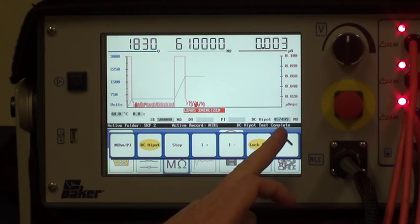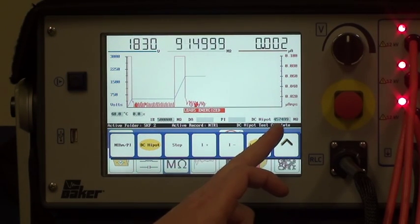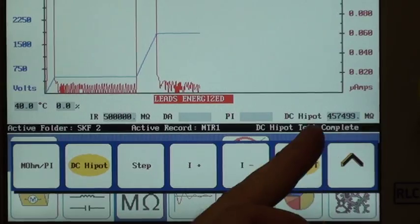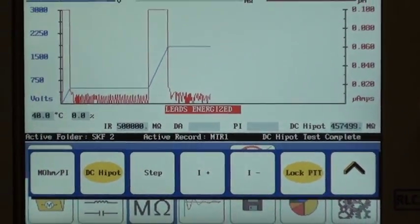The DC high pop has now been completed, and the value of 457,499 megaohms is now recorded in that window. Now we've completed the test,